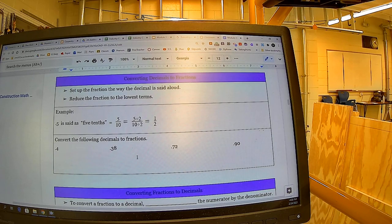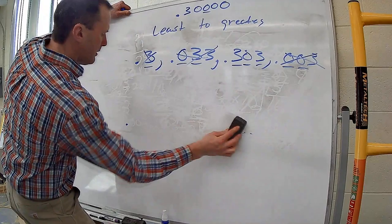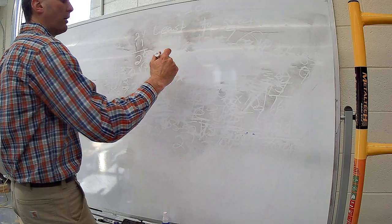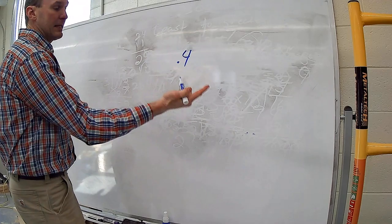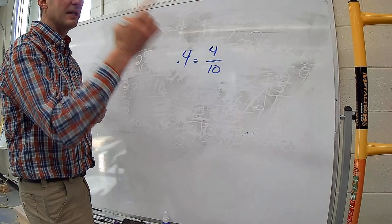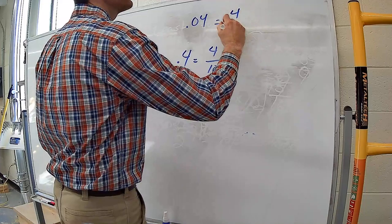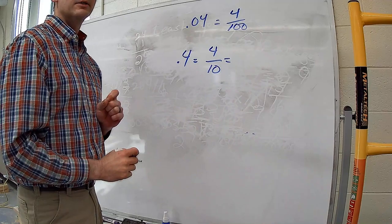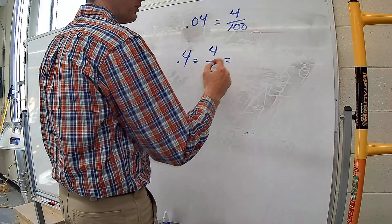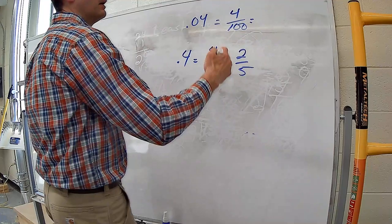To convert decimals to fractions: set the fraction up based on how the decimal is read aloud, then reduce the fraction to its lowest terms. For example, 0.4 is read as four tenths, so it equals 4/10. Both can be divided by 2, simplifying to 2/5. For 0.04 — four hundredths — that's 4/100. Both divisible by 4, giving 1/25.